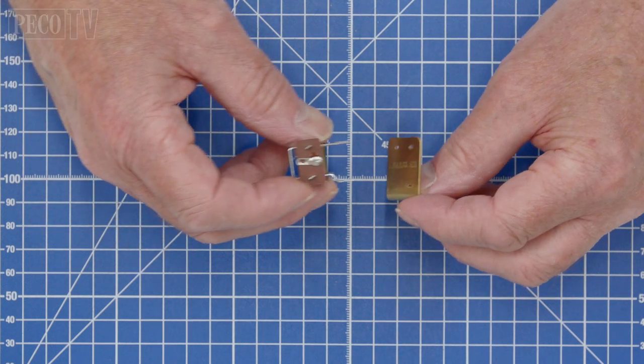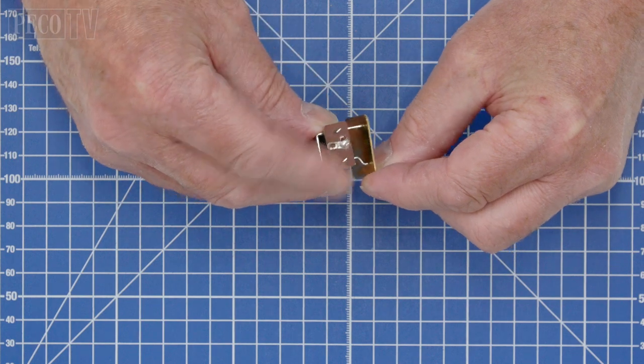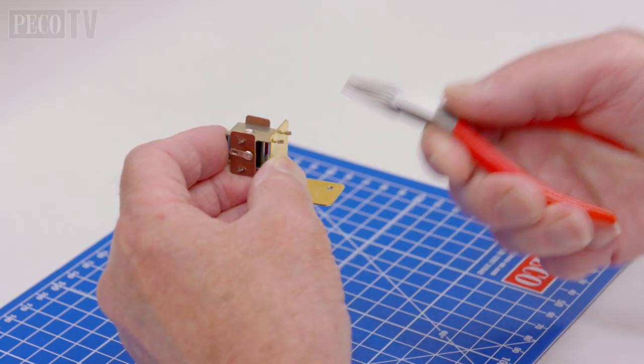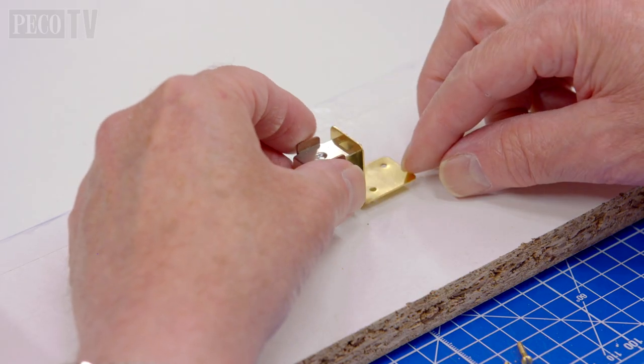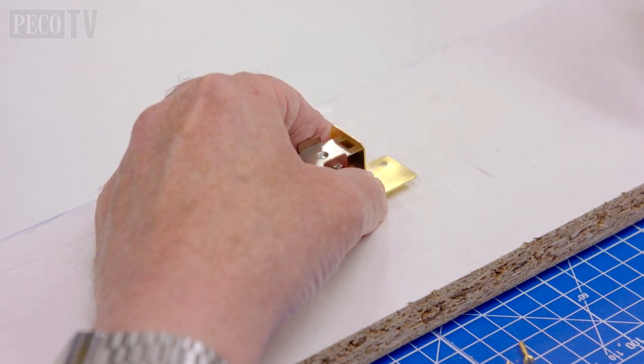Then fix the coil into the mounting bracket by inserting the three pegs through the holes in the bracket and twisting the ends. Place the armature rod in the hole through the coil of the solenoid and offer the complete assembly up underneath the baseboard.